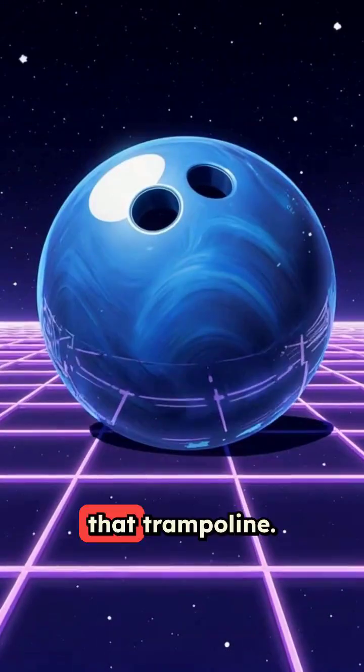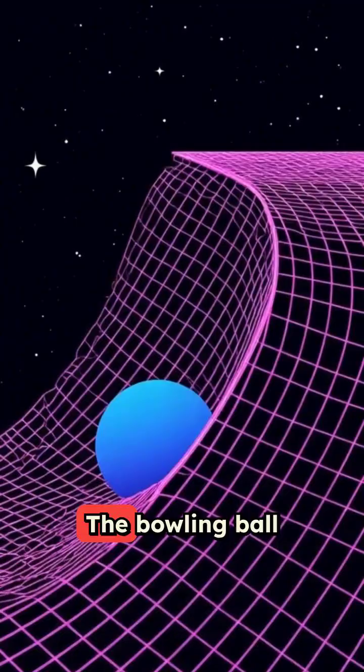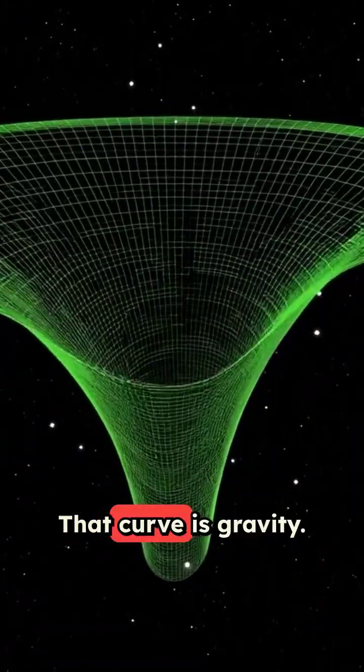Imagine space is that trampoline. The Earth is a heavy bowling ball sitting in the middle. The bowling ball makes the trampoline dip and curve. That curve is gravity.